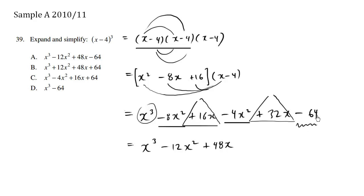And finally, negative 64. So when we look at the available choices, what we have here is choice A is correct.